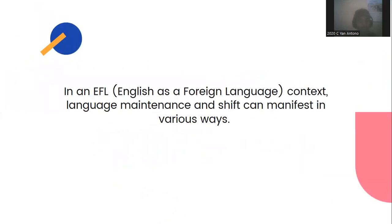In the EFL context, language maintenance and shift can manifest in various ways. For example, a community may prioritize the use of their traditional language in their interaction and education while also learning English as a foreign language for communication with outsiders for economic purposes. This can help maintain the vitality of the community's traditional language while also allowing them to access the benefits of English proficiency.